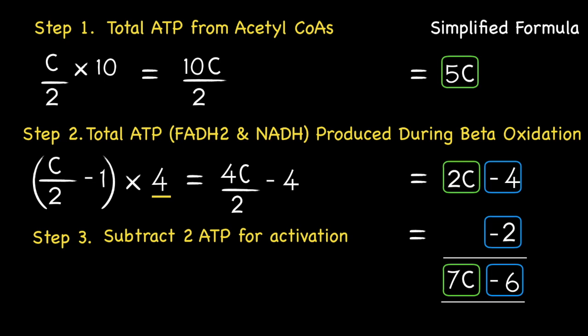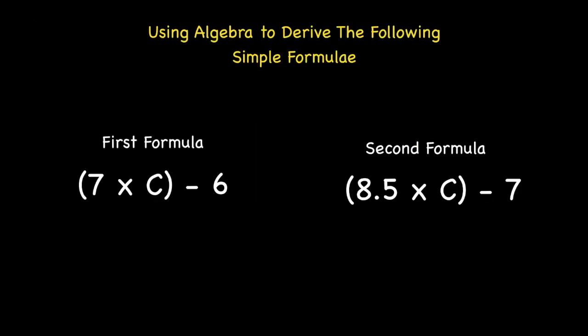Now, just in case you are unfamiliar with the way algebra works, 7C in algebra represents 7 times C. This needs to be performed first before subtracting the number 6. In order to ensure this, I place the 7 times C in brackets. Hence the formula 7 times C minus 6. So that's how you derive the first formula.